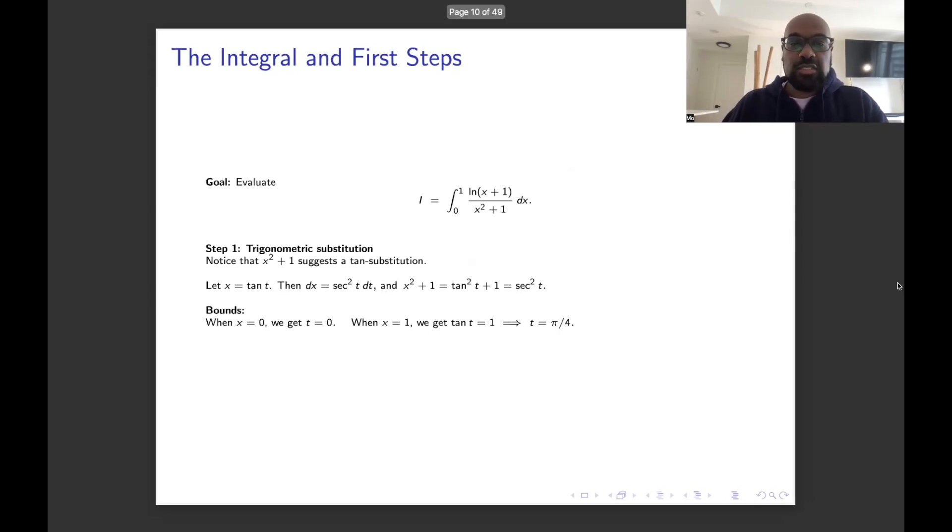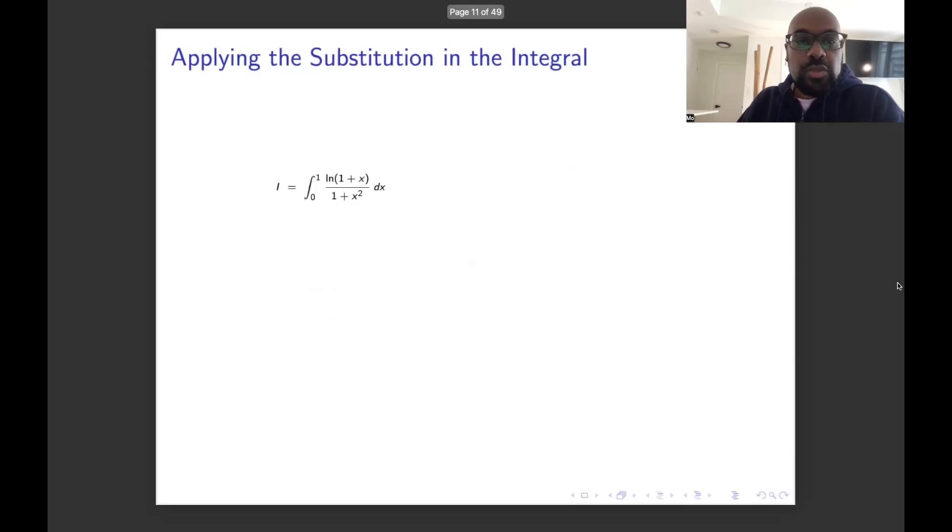Okay, so putting this all together then, we get that the integral that we're interested in is in fact the integral from 0 to π/4 of ln(1 + tan t) divided by sec² t times sec² t dt. Now, you might think this kind of complicated the integral a little bit, because what you're left with when you do the division is the integral from 0 to π/4 of the natural logarithm of 1 + tan t dt.